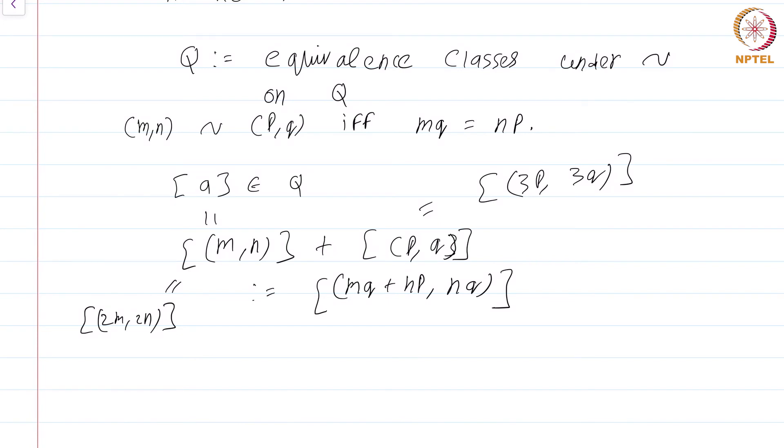That is not really difficult. You all know that it does not really matter which choice, how I represent the rational number, you get the same answer. But that needs a check, but it is just basic computation. Similarly, I can define [m,n] multiplied by [p,q] as just (mp, nq). This is just the standard multiplication formula in the rationals.